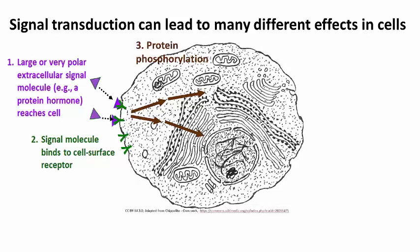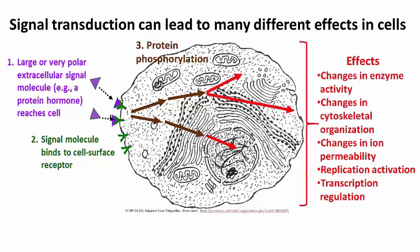When activated by phosphorylation, these proteins are responsible for a variety of different effects, ranging from changing the activities of other enzymes, to rearranging cell shape by manipulating the cytoskeleton, to increasing or decreasing ion permeability of cellular membranes, to turning genes on and off, to promoting replication and cell division.